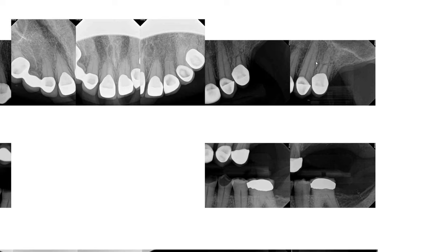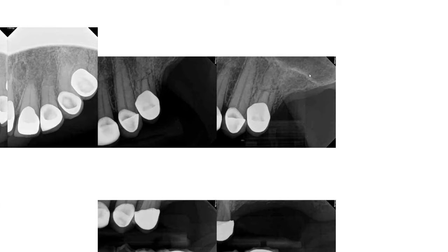So let me zoom in and look at this periapical radiograph more carefully. You can see the overall shape of the root of the first premolar. There's a thin radiolucent line that is extending from the mesial side all the way to the distal surface of the root.